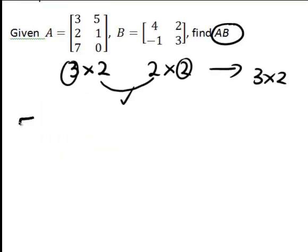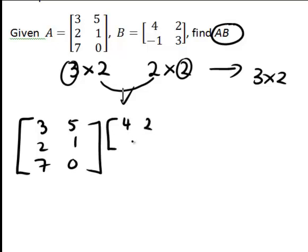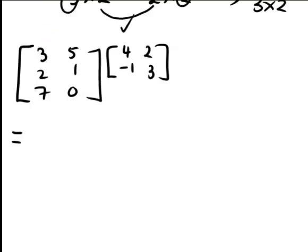So let's write these out again. A was of the form 3, 5, 2, 1, 7, 0. And B was of the form 4, 2, negative 1, 3. Now when we're multiplying these matrices together, I'm just going to allow a fair bit of space here so I can show the steps.